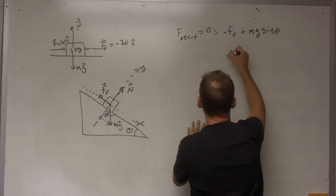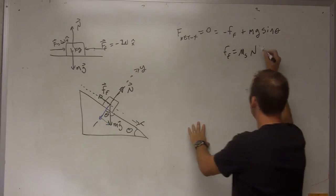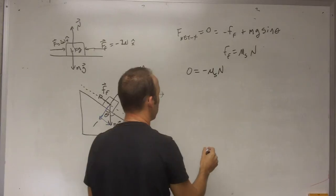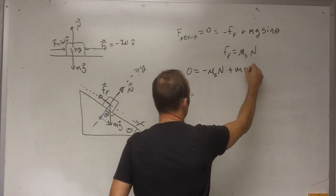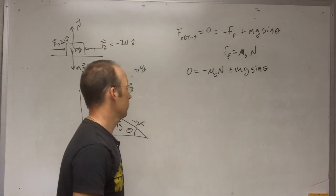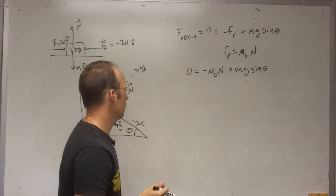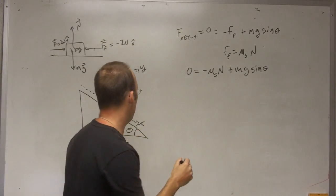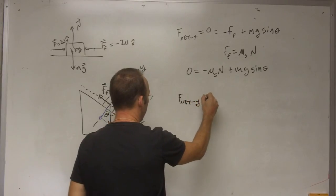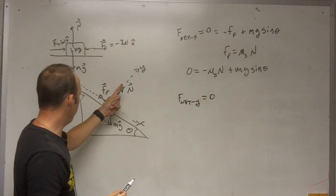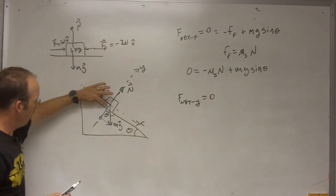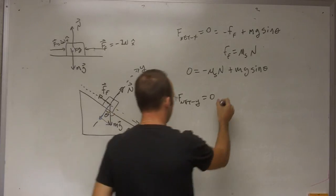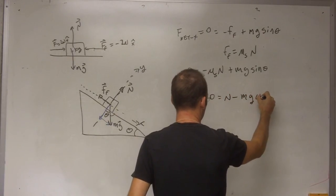Now I'm at the point of greatest frictional force, so instead I can say the frictional force equals mu-s times N. That gives zero equals negative mu-s times N plus mg sine theta. I experimentally determined theta, and I want to find mu. But I can't yet because I don't know N. So going to the y direction: F-net-y equals zero. I have N in the positive y direction, and then the y component of gravity — the cosine side of the triangle — so N minus mg cosine theta equals zero, giving N equals mg cosine theta.